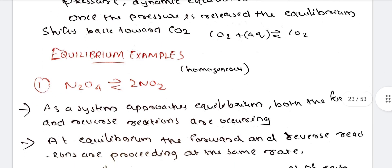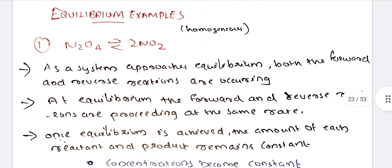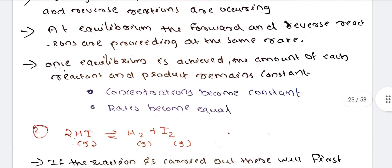Equilibrium examples are homogeneous examples. We are talking about N2O4. If we are talking about homogenous or heterogeneous, definition plus example, we are talking about full marker. N2O4 gives 2NO2. As a system approaches equilibrium, both the forward and reverse reactions are occurring. At equilibrium, the forward and reverse reactions are proceeding at the same rate. Once the equilibrium is achieved, the amount of each reactant and product remains constant. The concentration became constant and the rate became equal.